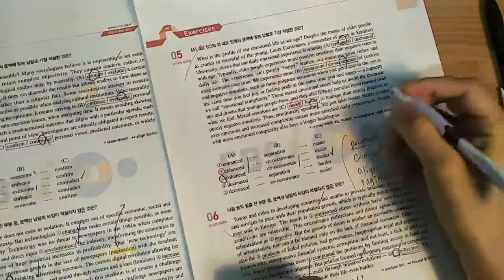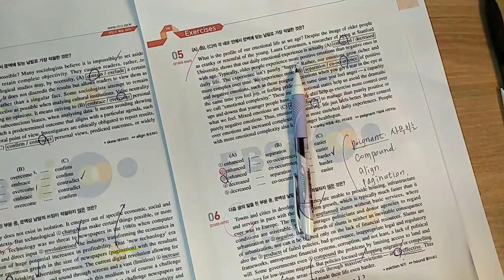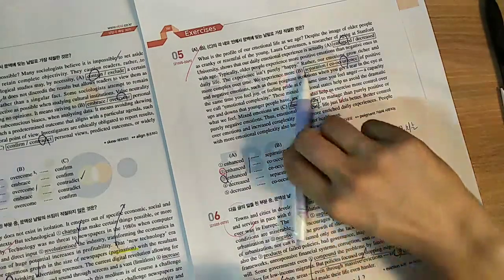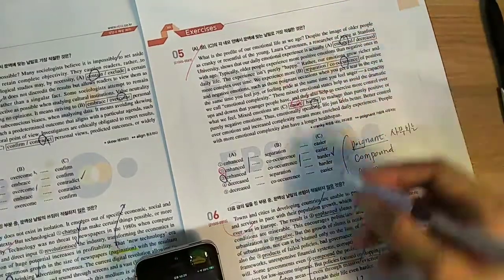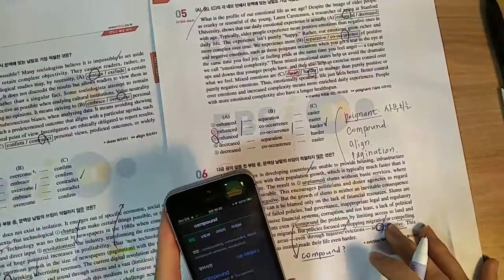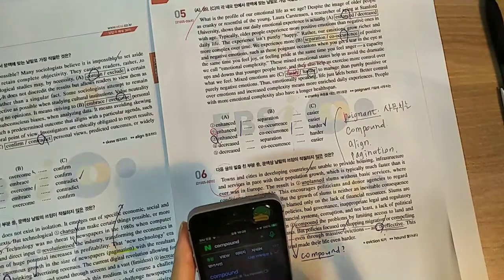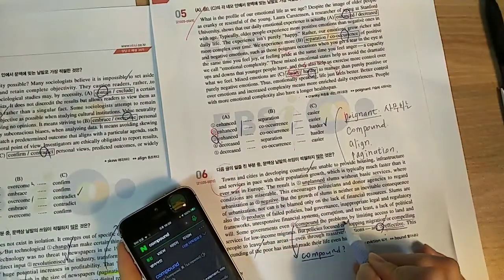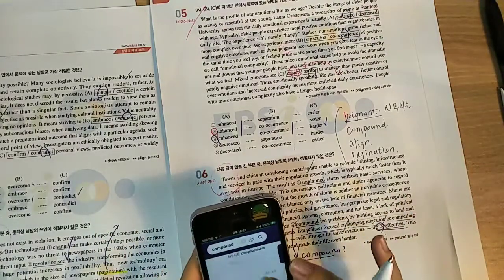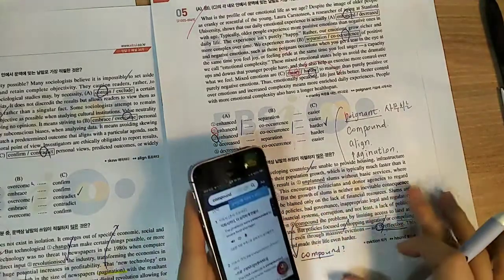Pagination. Compound. Compound는 어디서 나왔지? I don't know what the meaning of it is. Even compounded problems by limiting access to land. It's a more serious problem. Oh, that's right. It's a serious problem.